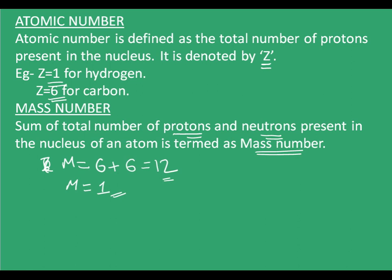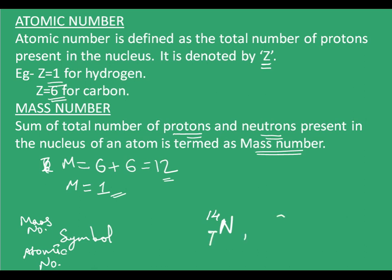An element is represented by writing its symbol, with the mass number on top and the atomic number on the bottom. For example, nitrogen is written as N with mass number 14 on top and atomic number 7 on the bottom. For carbon, the mass number is 12 and the atomic number is 6. For hydrogen, the mass number is 1 and the atomic number is also 1.